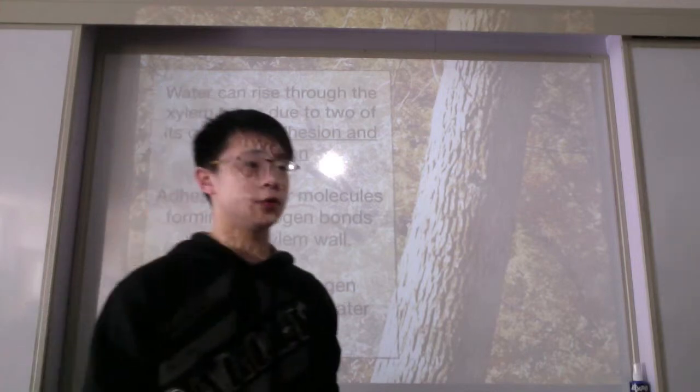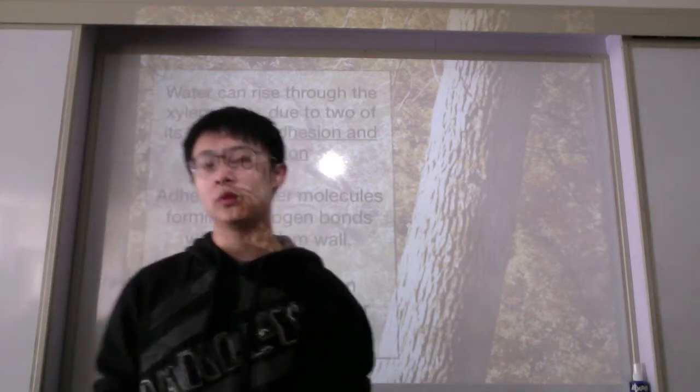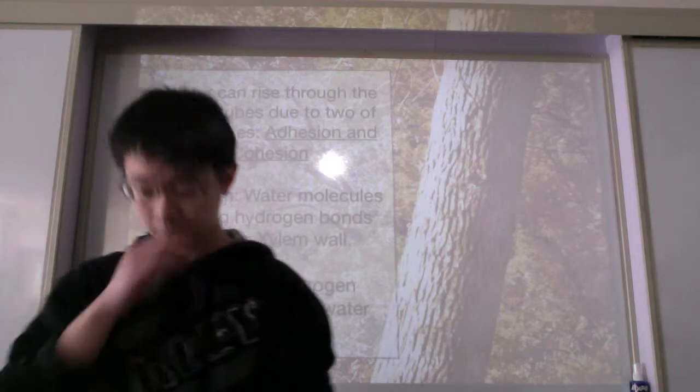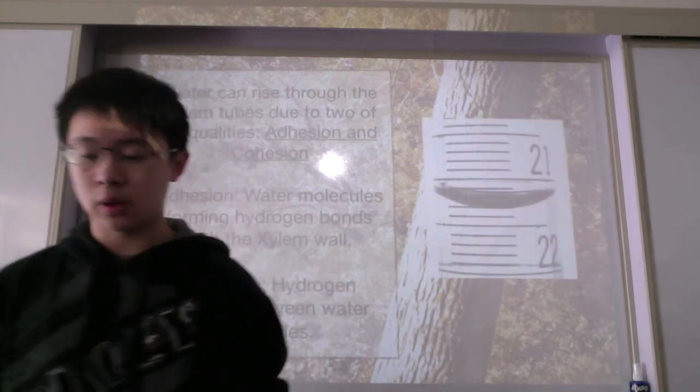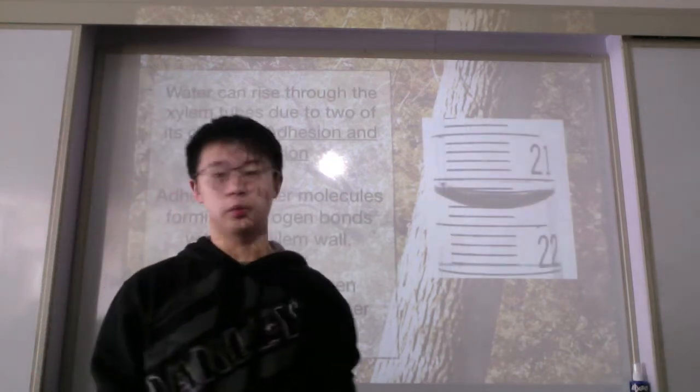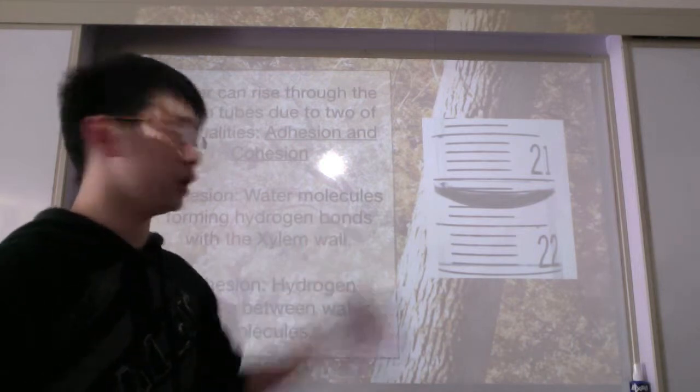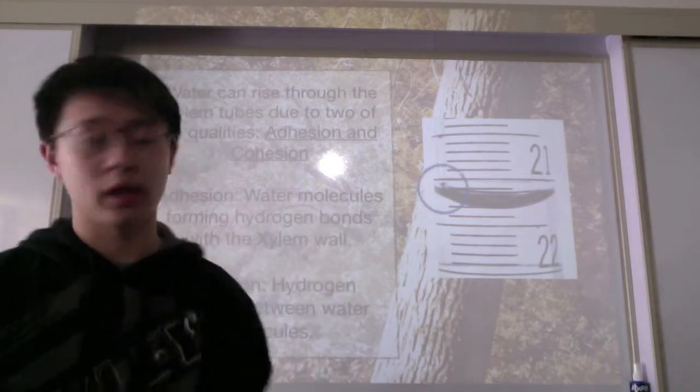Water can rise through the plant with two of its qualities: adhesion and cohesion. Adhesion is water molecules forming hydrogen bonds with the xylem wall. You can imagine a graduated cylinder, and that would be adhesion.